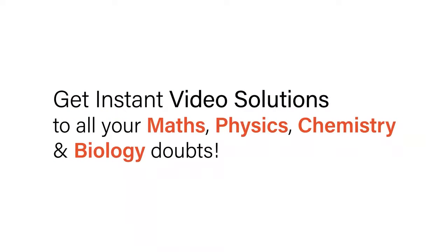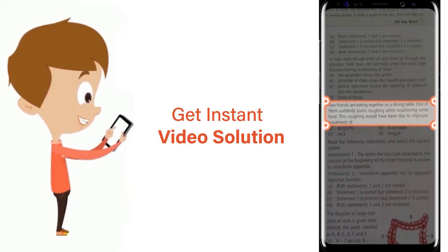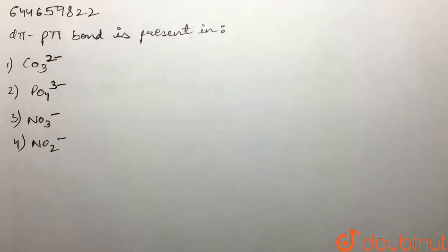With Doubtnet, get instant video solutions to all your math, physics, chemistry, and biology doubts. Just click the image of the question, crop the question, and get instant video solution. Download now. Our question is: d-pi p-pi bond is present in which one?